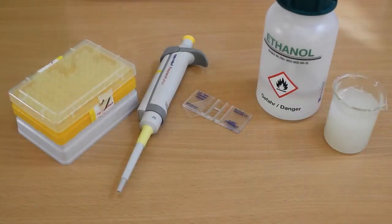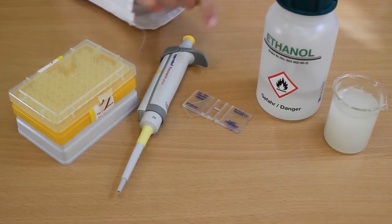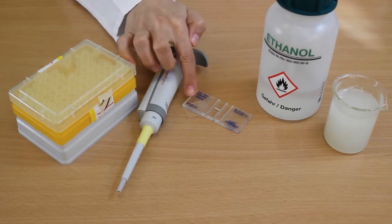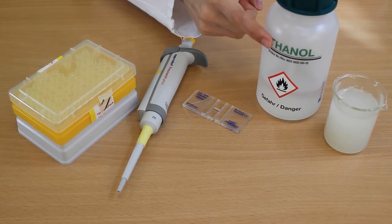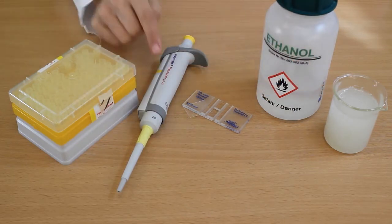Hi, today we're going to show you how to use a hemocytometer to count cells and share some tricks with you so you can do it right from the start. For the exercise you will need a hemocytometer, its coverslip, ethanol, your sample and a pipette with tips.